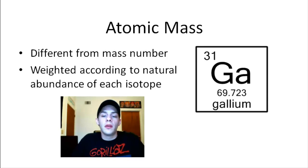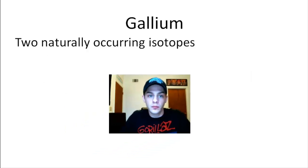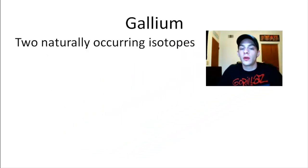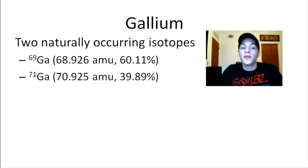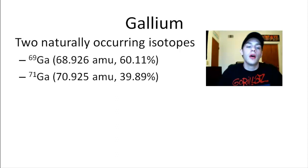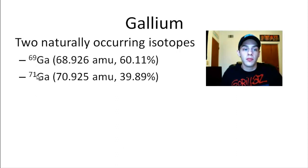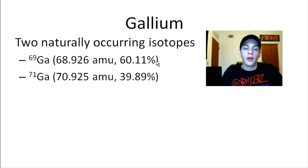Let's see if we can figure out the atomic mass of gallium without just being given it. Gallium has two naturally occurring isotopes. Gallium-69 has a mass of 68.926 AMU and constitutes 60.11% of naturally occurring gallium. Gallium-71 has a mass of 70.925 AMU and a natural abundance of 39.89%. Gallium-71 is heavier because it has two more neutrons. And if you add the percent abundances together, you get 100%.